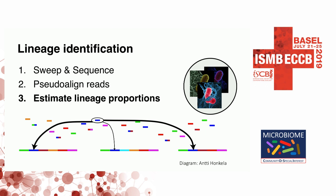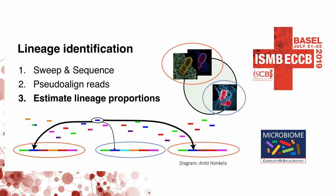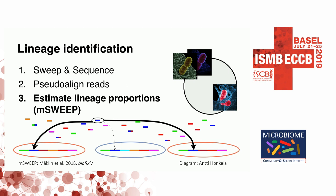Instead, we take the most closely related strain sequences and group them together so we get lineages which are very related to each other and hopefully biologically meaningful. For example, we could use sequence types or clonal complexes, and we build a probabilistic model on top of that to infer the proportions on the lineages rather than the individual strains.